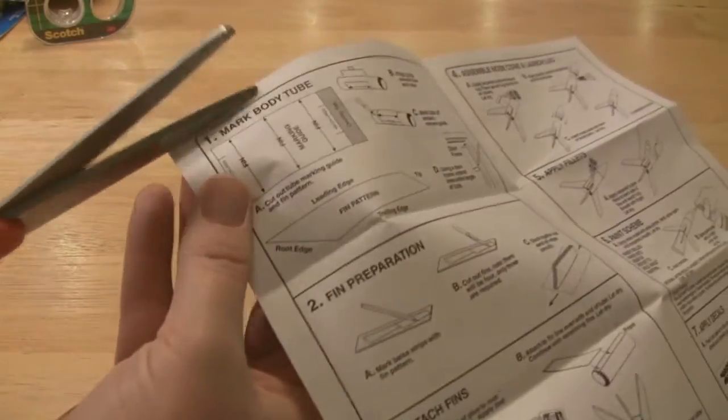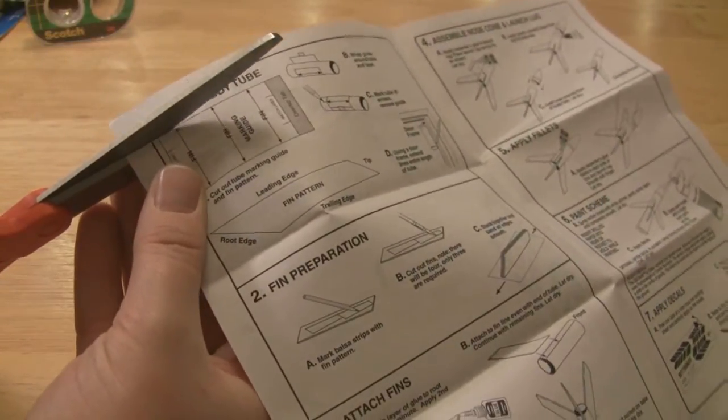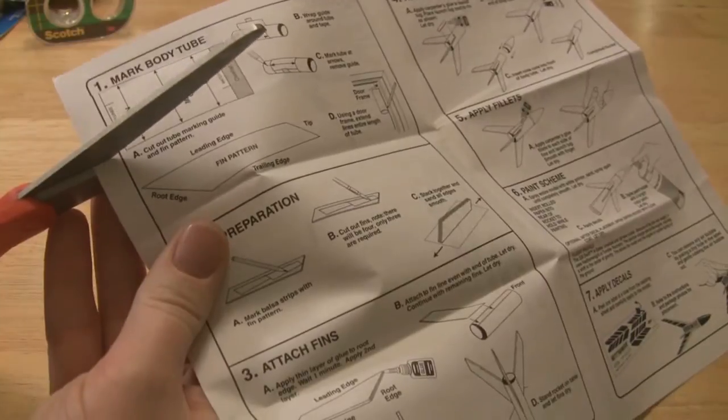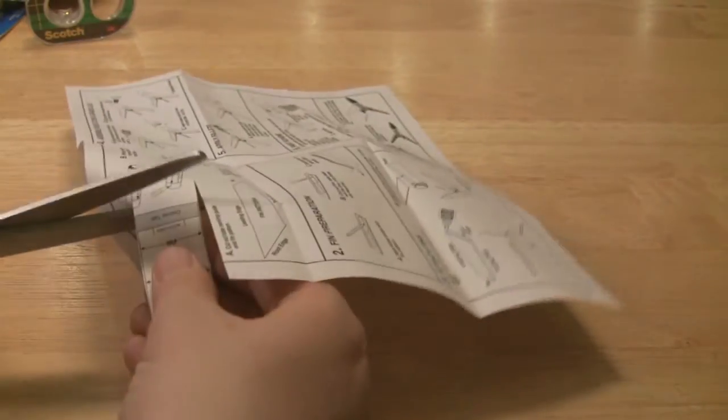Okay, step one is to mark the tube, the body of the rocket for the wings. Should be pretty standard for any model rocket from Estes.